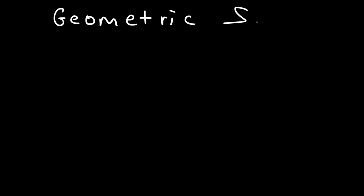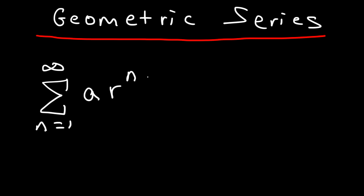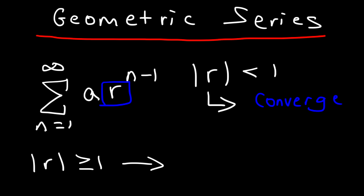The next thing we need to talk about is the geometric series. First you need to identify the form that it comes in — there's going to be a constant a and then your common ratio r is typically raised to the n or n minus 1 power. Your goal is to identify the value of r. If the absolute value of r is less than 1, then the series is going to converge. If the absolute value of r is greater than or equal to 1, then the series will diverge.